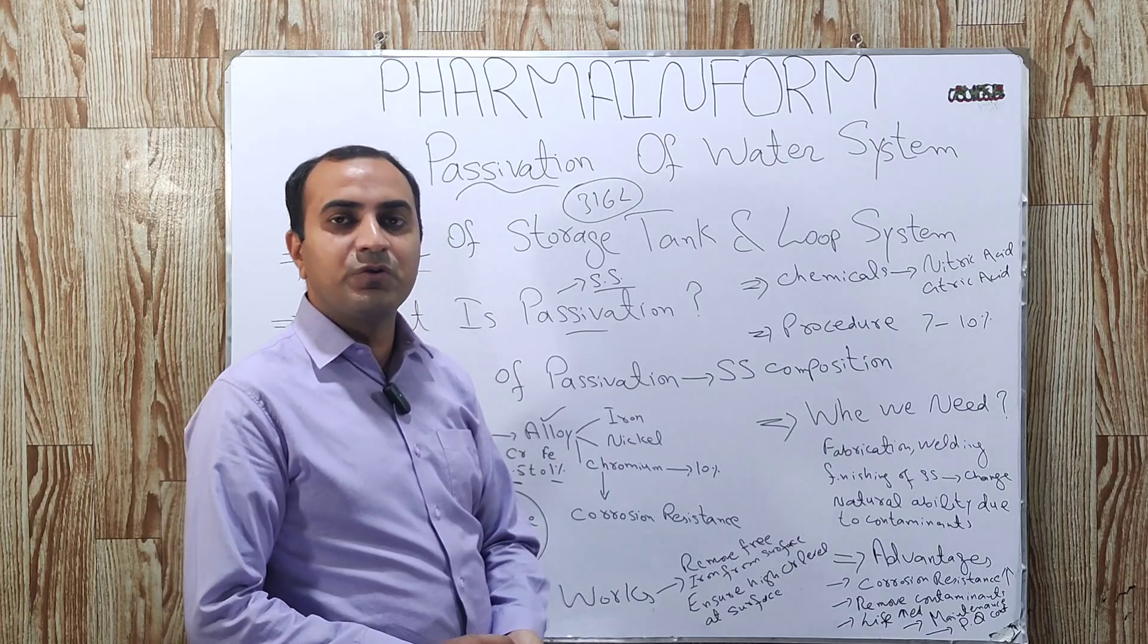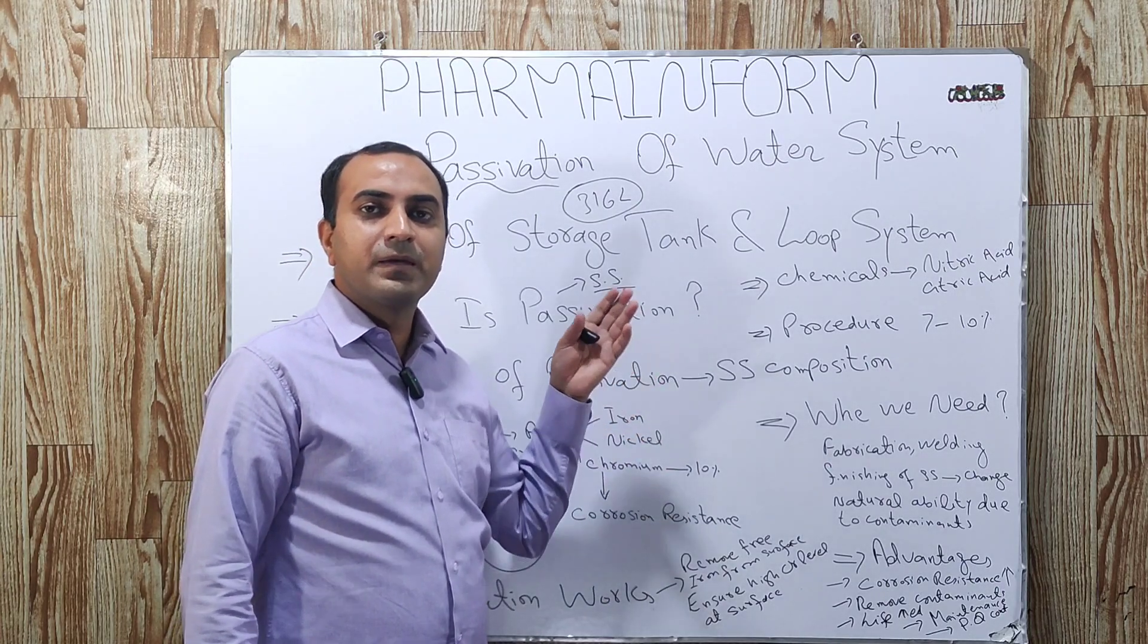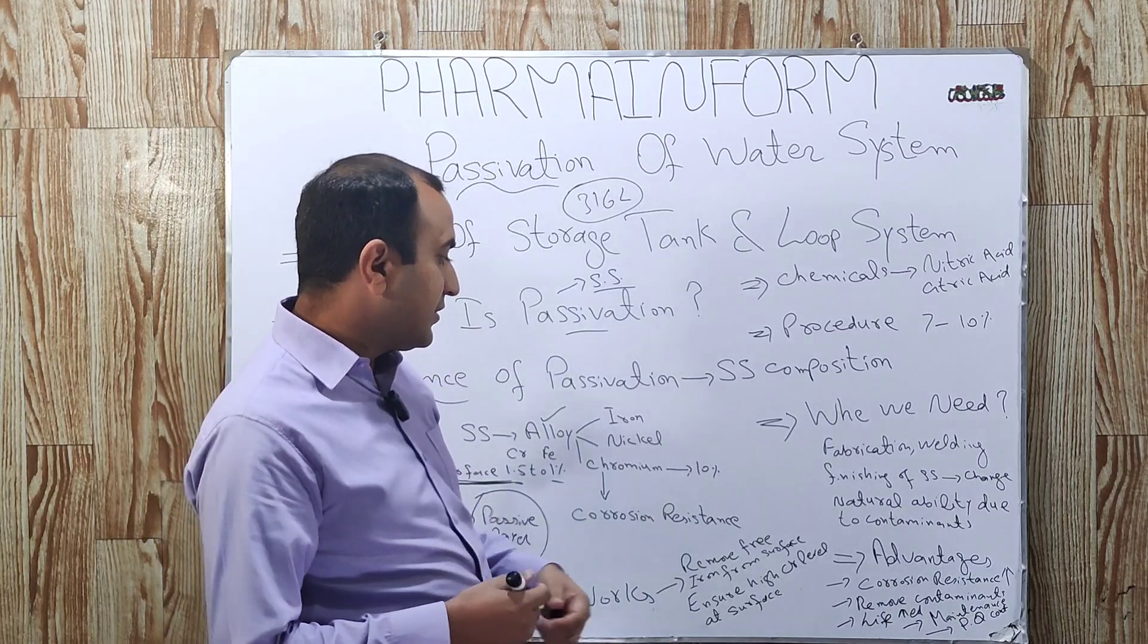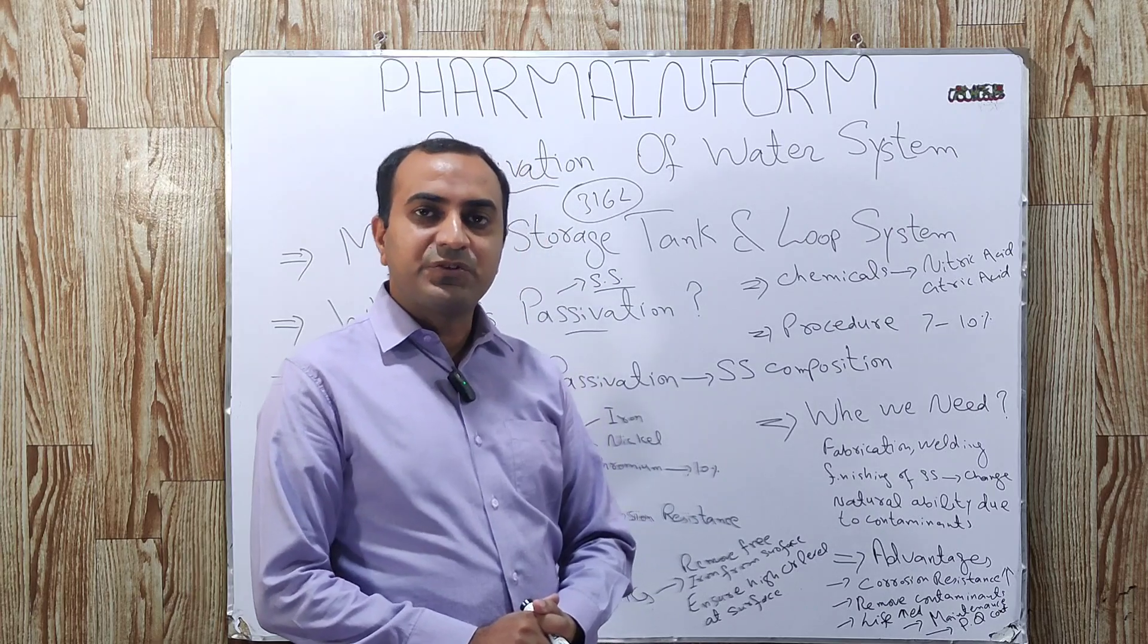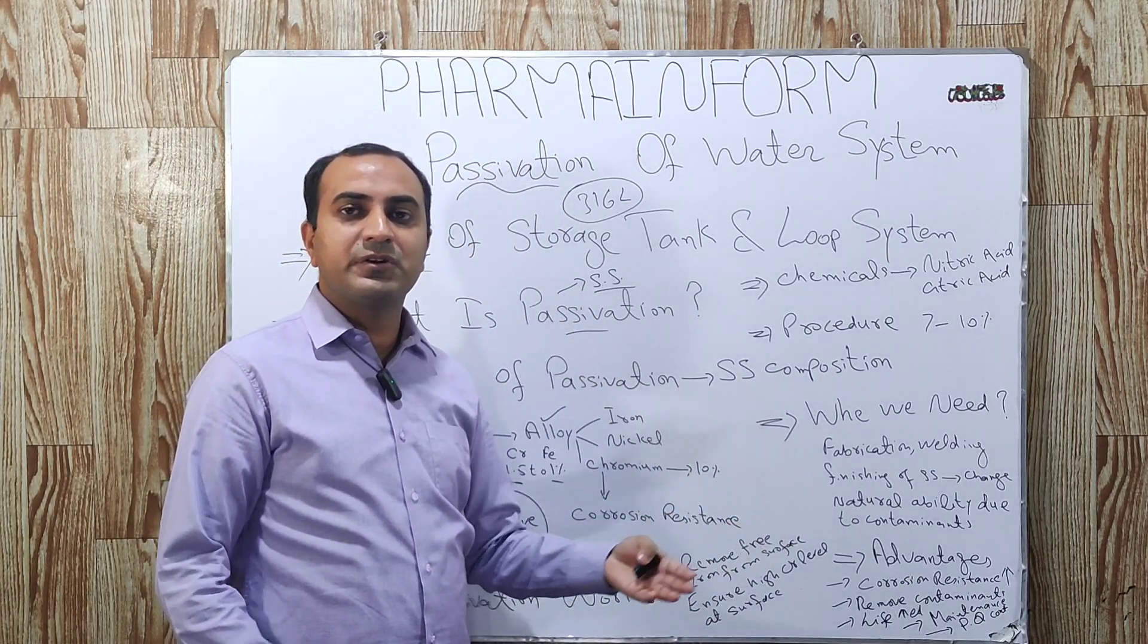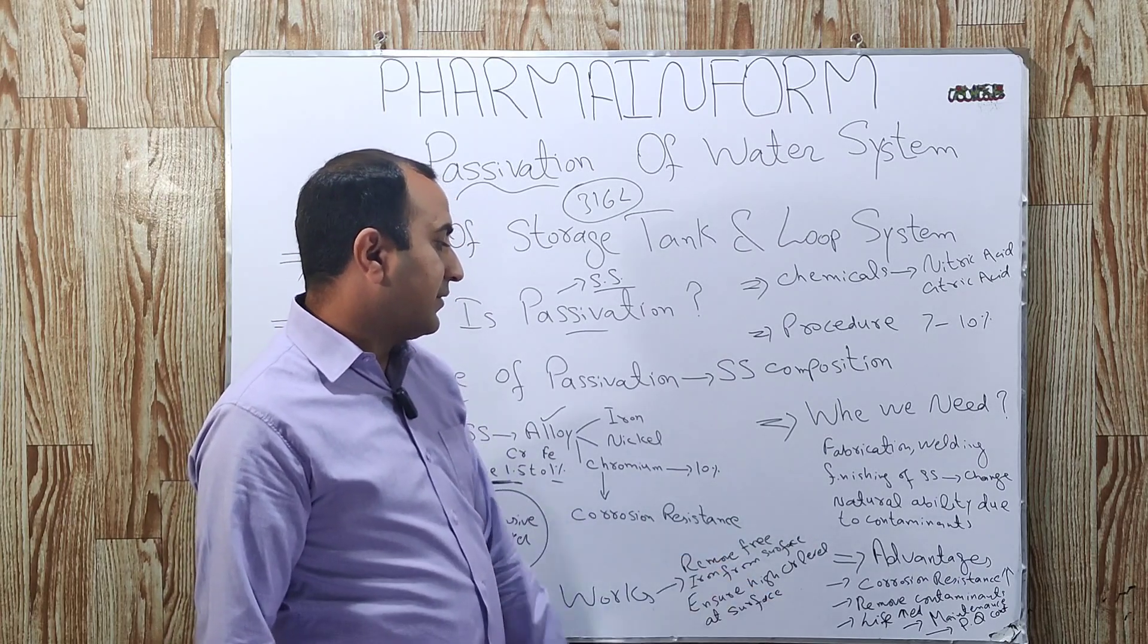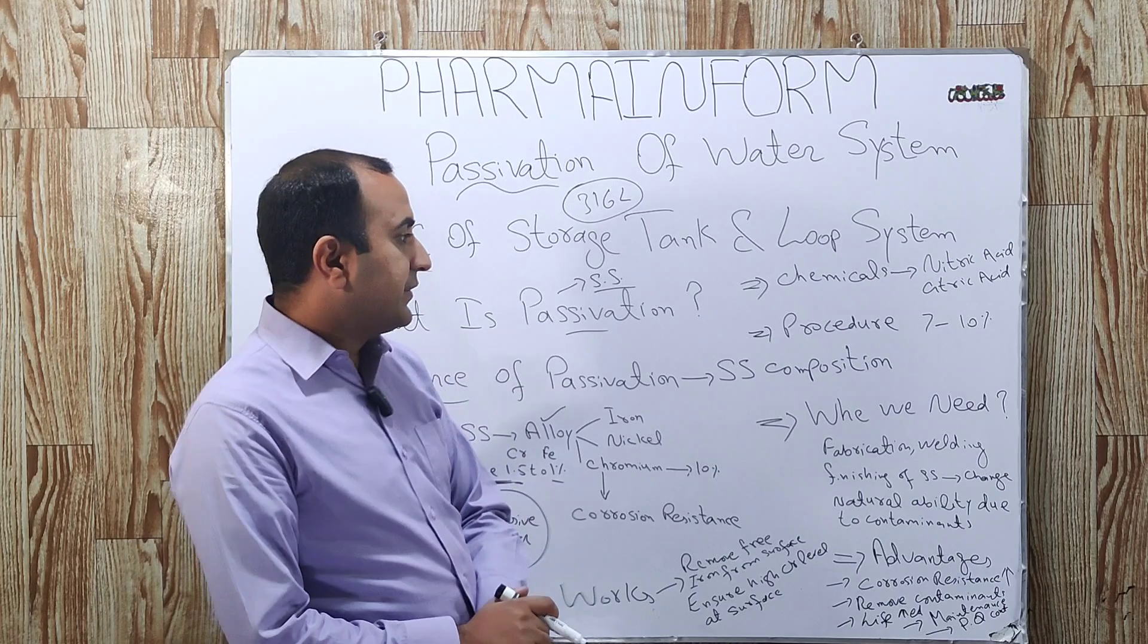Passivation is required because contaminants present at the surface reduce the properties of chromium for its corrosion resistance. What are the advantages of passivation? Corrosion resistance is increased by the passivation. Equipment life is increased. Maintenance cost is reduced and product quality is improved due to the elimination of contaminants. And passivation removes contaminants from the surface.